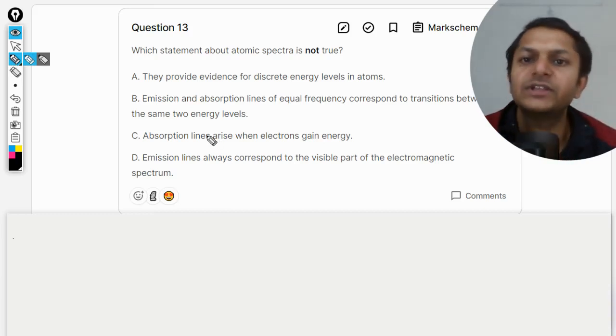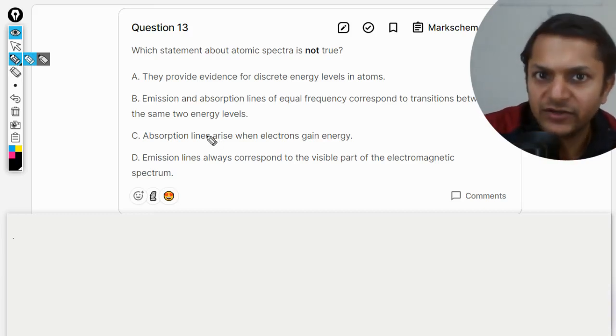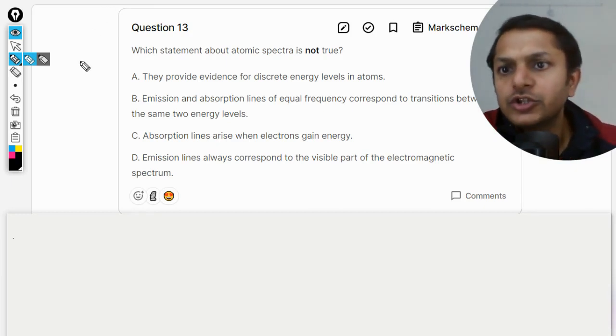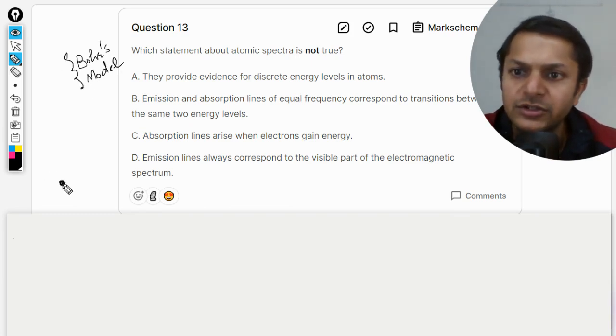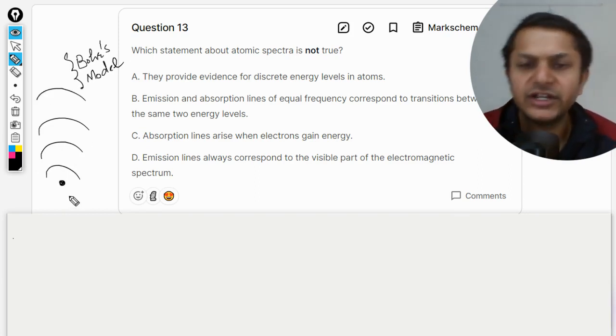It is true, and let us see what is there in this question. Which statement about atomic spectra is not true? So he's talking about the Bohr's model of the atomic structure, which is applicable to hydrogen and similar metals. So there are shells and electrons are moving up and down.